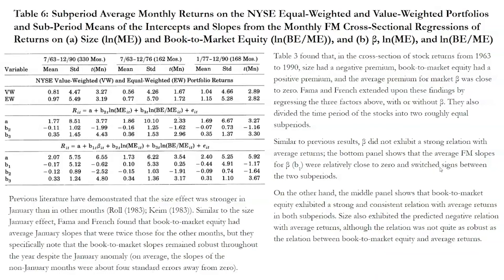Table 3 showed that from 1963 to 1990, size had a negative premium, book-to-market equity had a positive premium, and the average premium for market beta was close to zero. Table 6 extended these findings by regressing the three factors with or without beta across sub-periods. Beta did not exhibit a strong relation with average returns in either sub-period, while book-to-market equity showed a strong and consistent relation, and size showed a negative relation though less robust. Book-to-market equity had average January slopes twice those of other months, but remained robust throughout the year. That concludes this video on the Fama-French three factors — I hope you found it helpful.